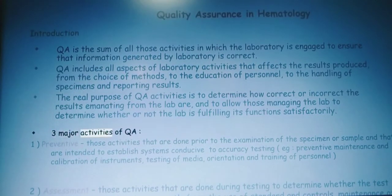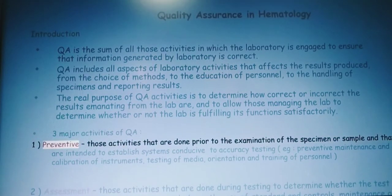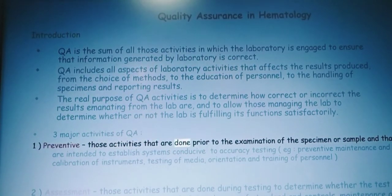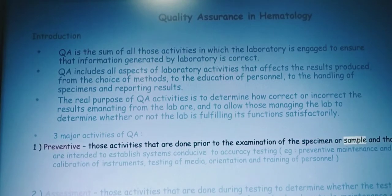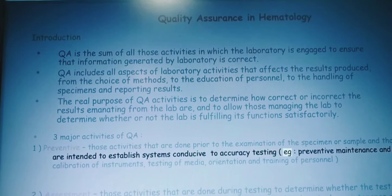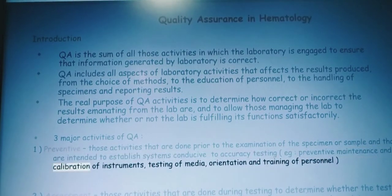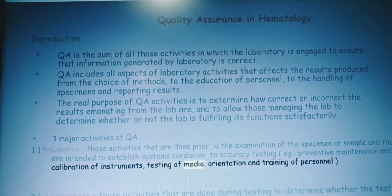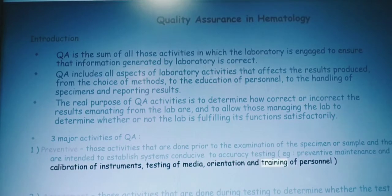Three major activities of QA. One, preventive: those activities that are done prior to the examination of the specimen or sample and that are intended to establish systems conducive to accuracy testing, e.g., preventive maintenance and calibration of instruments, testing of media, orientation, and training of personnel.